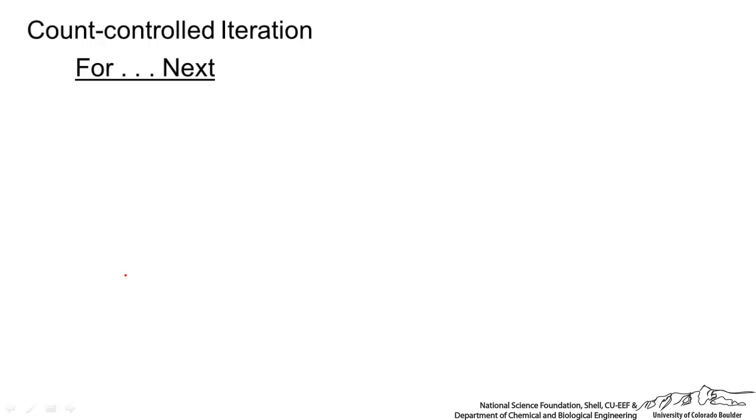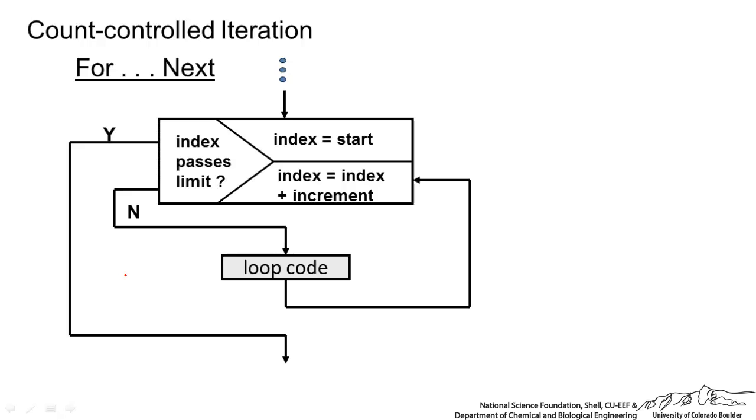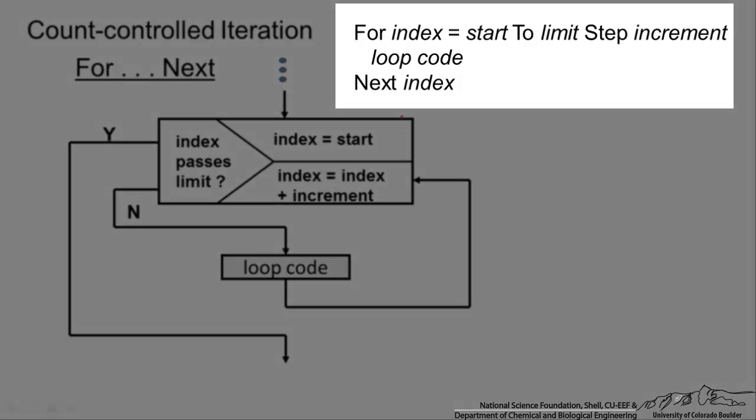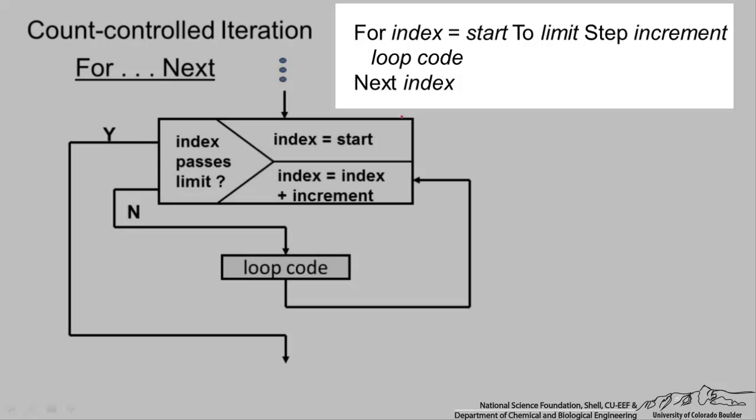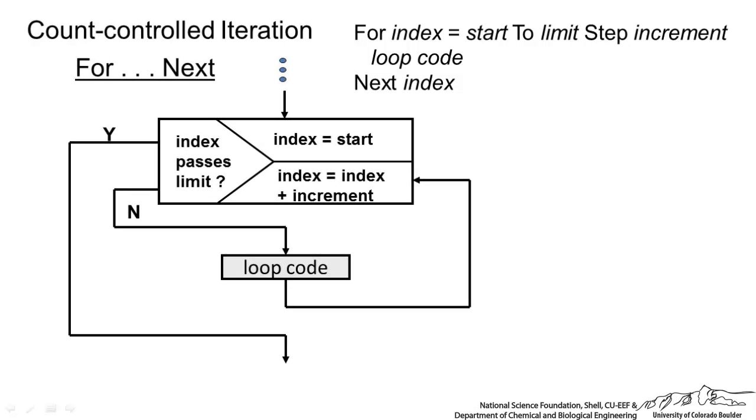The final thing is count controlled iteration. Let's say you want to do something a certain number of times. For example 10 times. The flow diagram looks like this. We have this box. We have a start value. And then we have an index, an increment. Typically that is 1 but it doesn't have to be. When the index passes the limit then we exit out of this loop. If the index does not pass the limit then we keep going. The general structure looks like for index equals start to some limit step increment we do loop code and then we do next index. If you leave out this step increment it just assumes a step value of 1 which is quite common. But sometimes you might want to count downwards and use a negative 1 here.